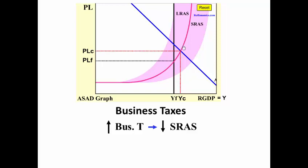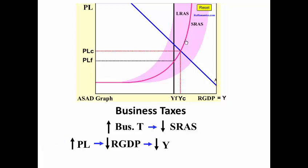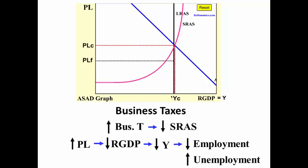As short-run aggregate supply shifts to the left, this increases the price level and decreases real GDP and national income. This decrease in real GDP and national income decreases employment and increases unemployment in the economy, but gets us back to full employment — just at a higher price level.